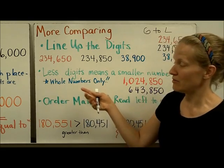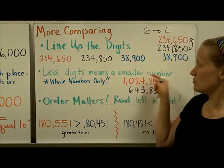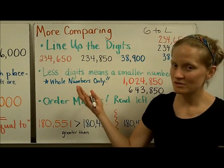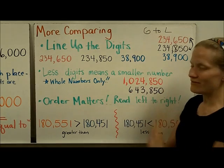Here's a shortcut that you might already know, but let's put words to it. Less digits means a smaller number. But this trick will only work for a whole number. So let's show what that means. Here I have a number with 1, 2, 3, 4, 5, 6, 7 digits.